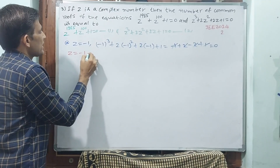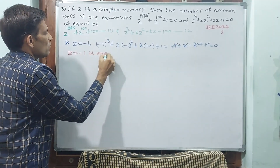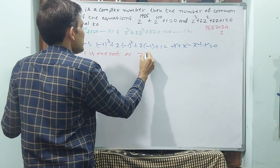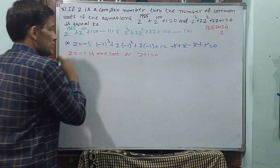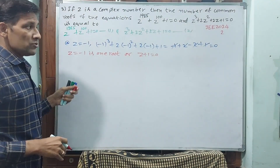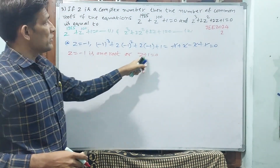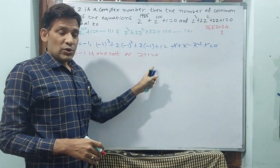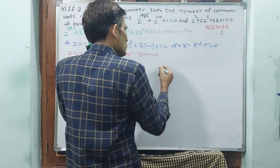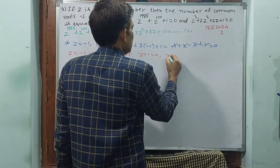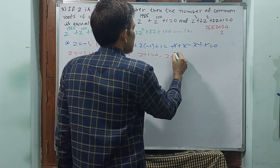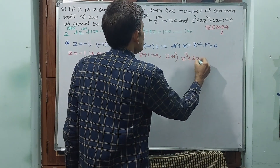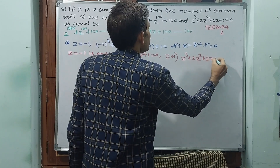Since Z = -1 is a root, Z + 1 = 0 is a factor. We divide Z-cube plus 2Z-square plus 2Z plus 1 by Z + 1 to get the remaining two roots.